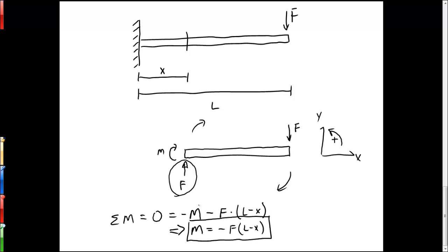Solving for M gives us M equals minus F times (L minus x). At x equals zero — that is, at the wall — the moment equals minus F·L. At x equals L, where we're applying the force, the moment equals zero, which makes sense because there's no moment at the point through which the force is acting.